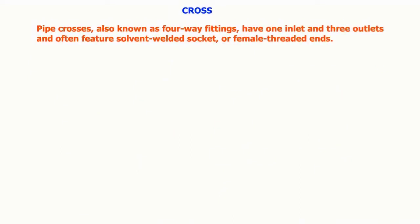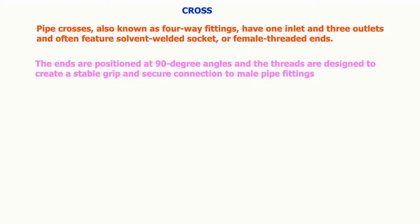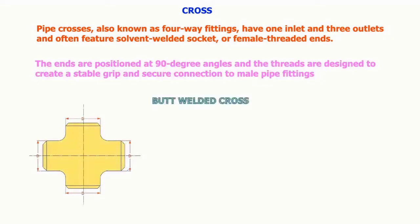Pipe crosses, also known as four-way fittings, have one inlet and three outlets and often feature solvent-welded socket or female threaded ends. The ends are positioned at 90 degree angles and the threads are designed to create a stable grip and secure connection to the male pipe fittings.